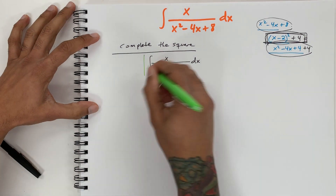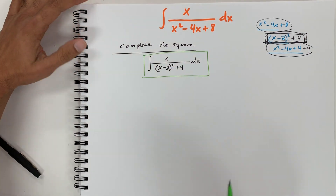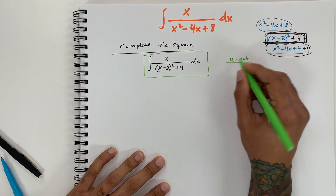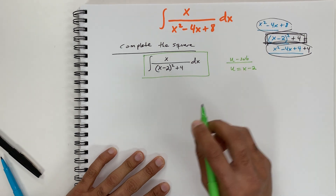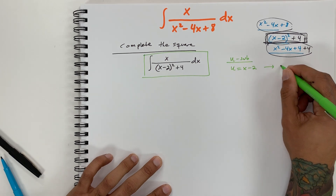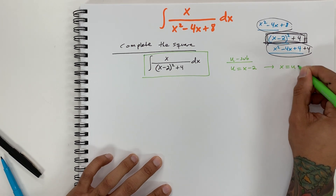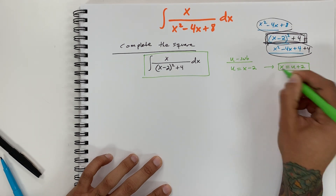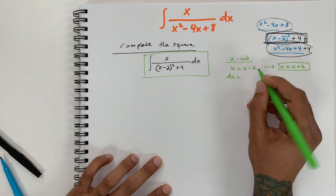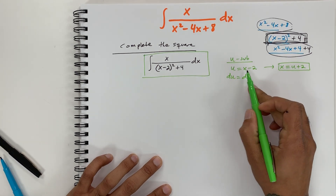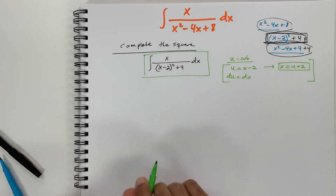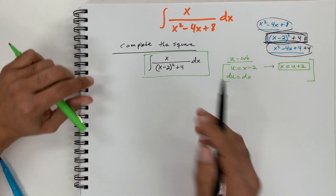From here, let's do a u-substitution. We're going to say u is equal to x minus 2. Solving for x gives us x equals u plus 2 — this will come in handy in a little bit. And then du equals dx, because the derivative of x minus 2 is just 1.